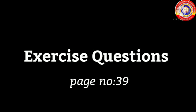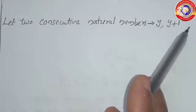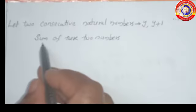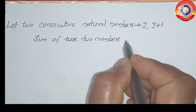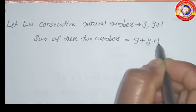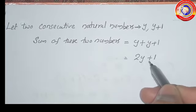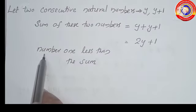Next we continue the exercise questions from the textbook, page number 39. First one: add two consecutive natural numbers and find the number one less than this. Let the two consecutive natural numbers be y and y plus 1. The sum of these two numbers is y plus y plus 1, which equals 2y plus 1.